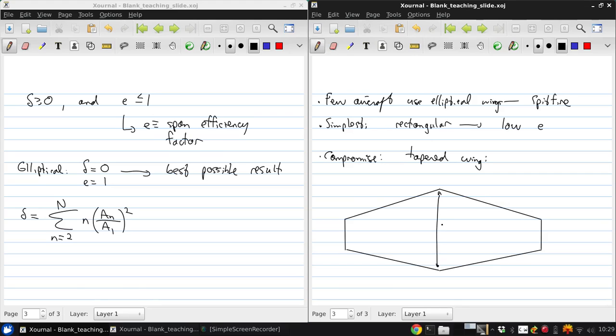Where we can define a root chord CR and a tip chord CT, and define a taper ratio CT over CR. And it's possible to select such a value of that taper ratio for a given aspect ratio to closely approximate the elliptical lift distribution.